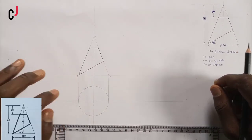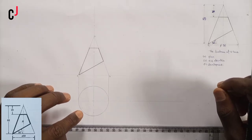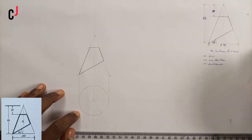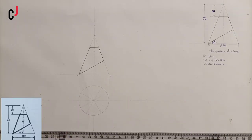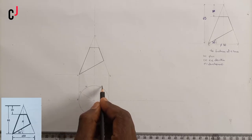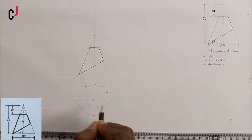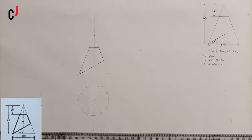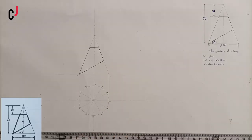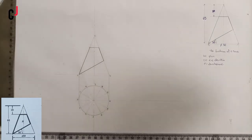My next step is to divide my circle into 12 equal parts. I've succeeded in dividing my circle into 12 equal parts. Then I'll number them starting over here as 0, 1, 2, 3, 4, 5, and then 0 also here, 1, 2, 3, 4, and 5.